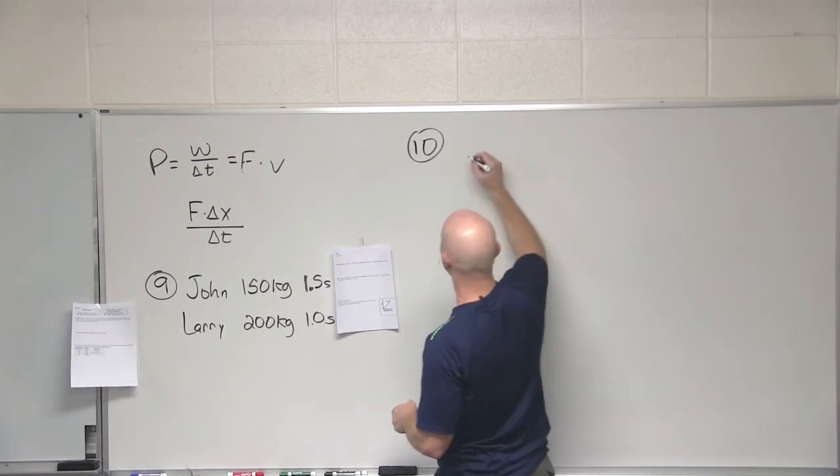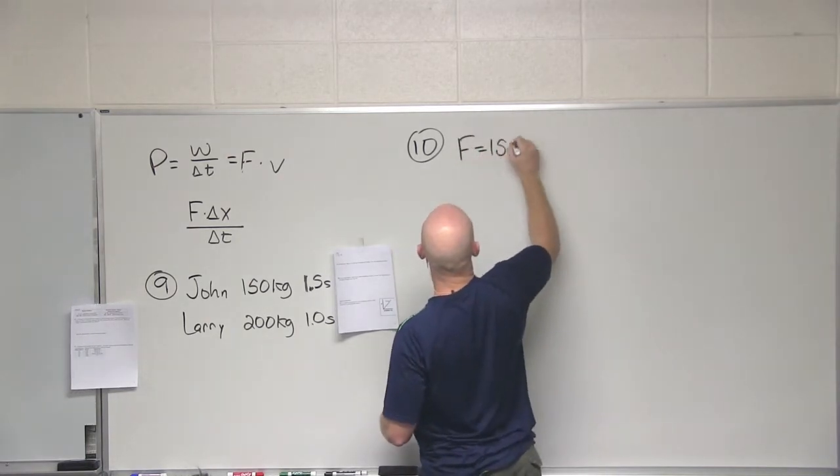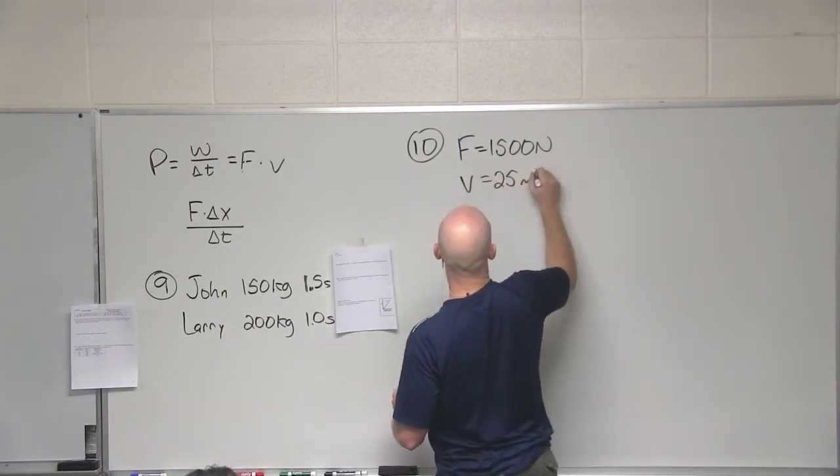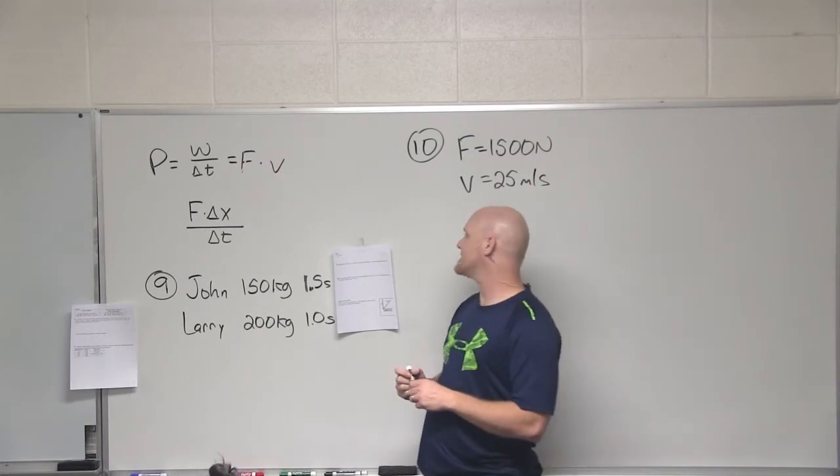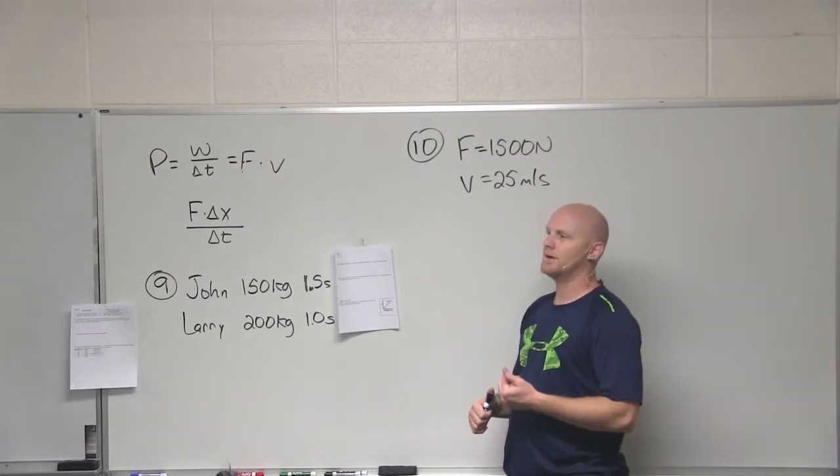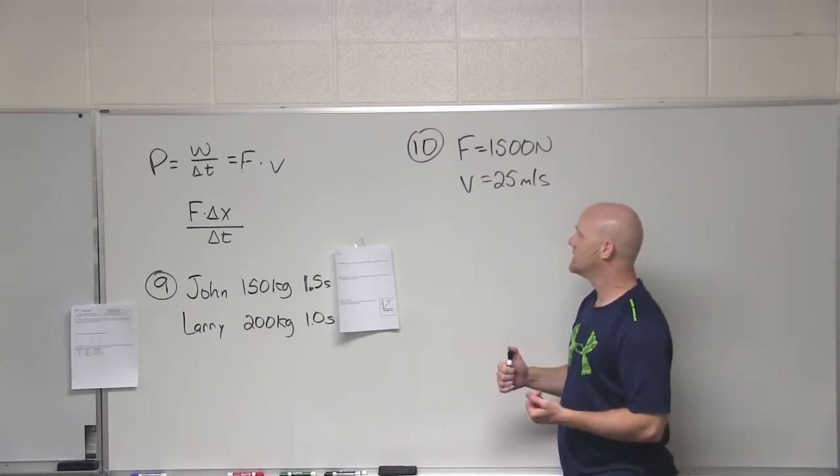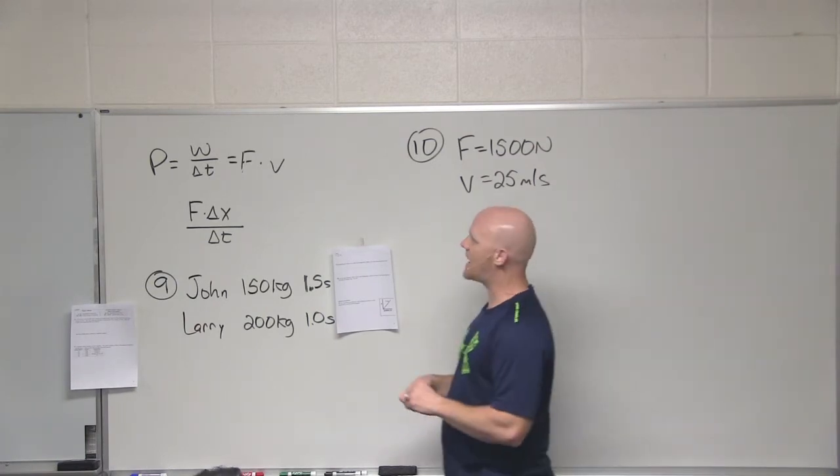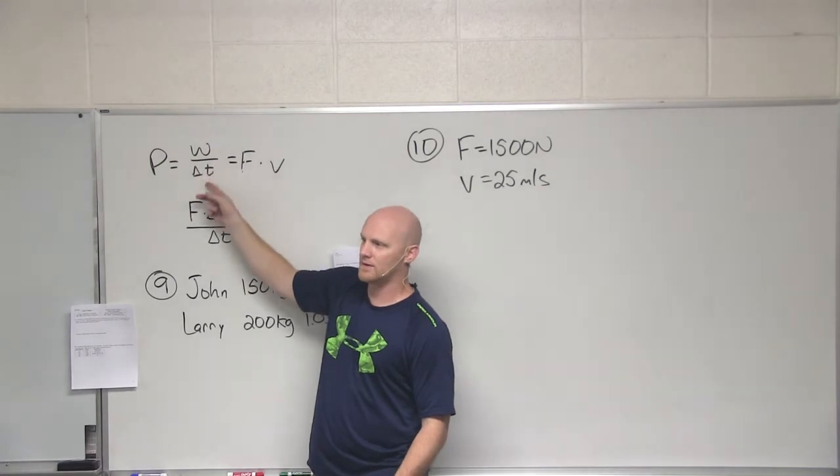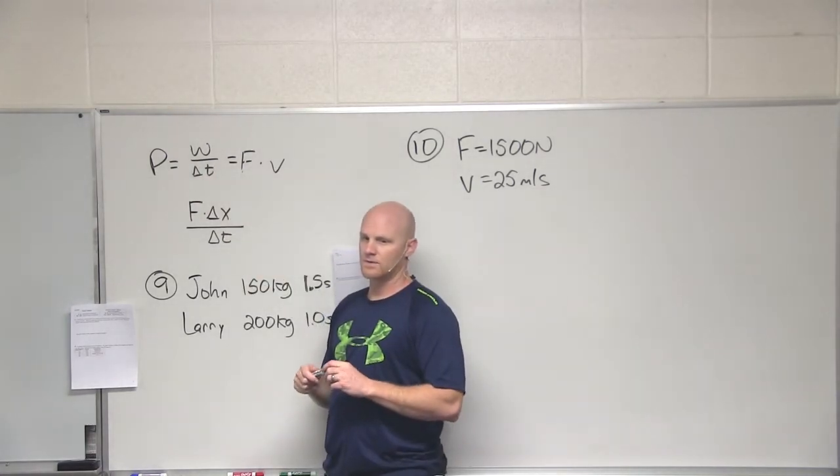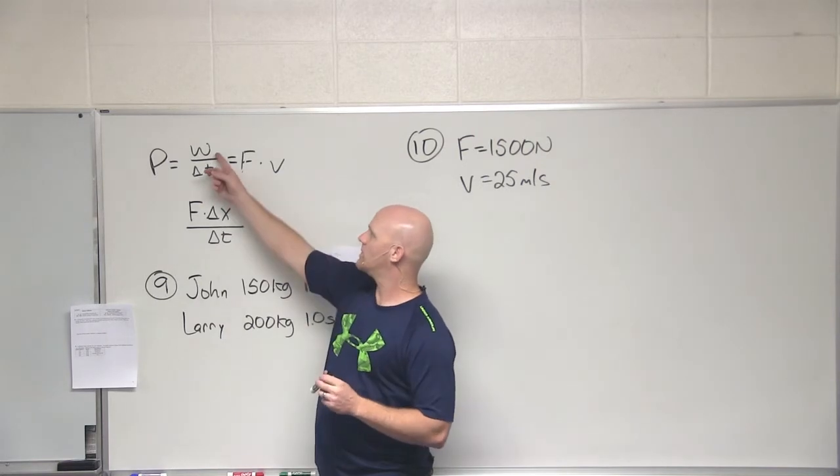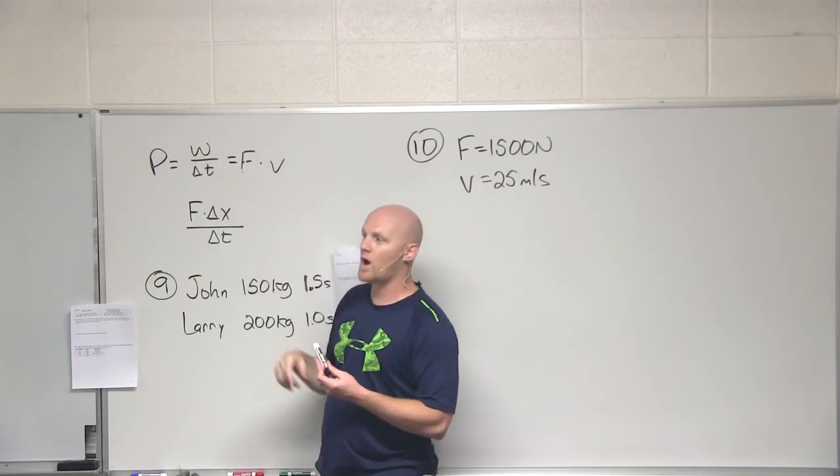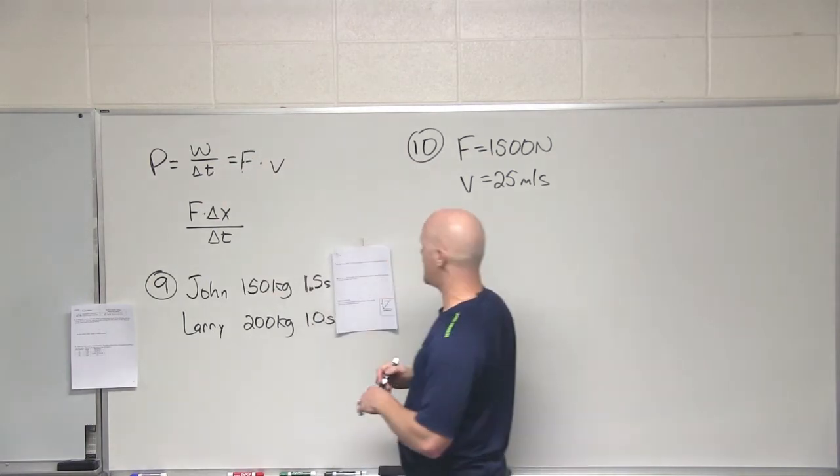Number ten: a go-kart engine delivers 1500 newtons of force while maintaining a velocity of 25 meters per second. In this case, how much horsepower is the engine providing? You're given a conversion there: one horsepower is 745.7 watts. So in this case, we need to find power and we've got to convert it to horsepower in the end. Power here is in watts. What must a watt actually be? Well, that's work - work is in what units? Joules. And time in seconds. So it's joules per second. A watt is a joule per second.